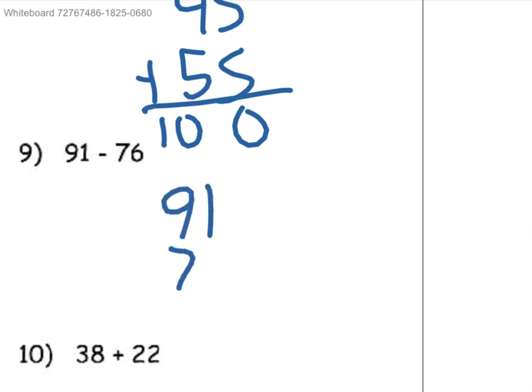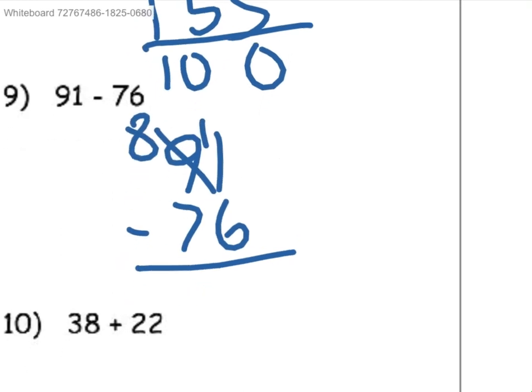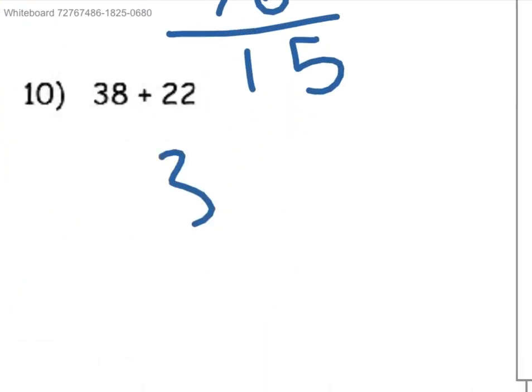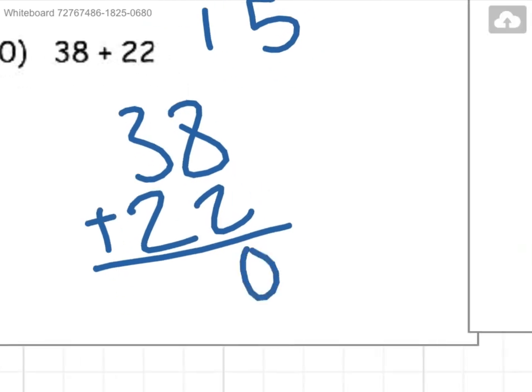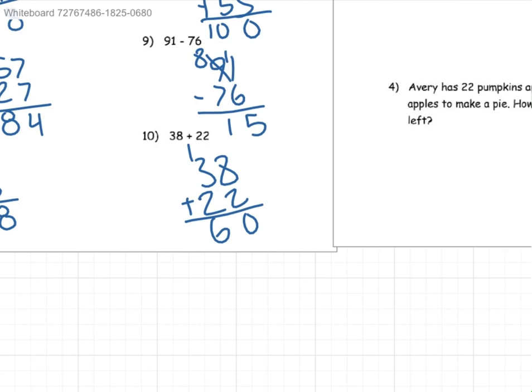91 minus 76. So turn this into an 8, put the 1 over here. 11 minus 6 is equal to 5. And then 8 minus 7 is equal to 1. So our answer is 15. 38 and 22, add that together. 8 plus 2 is equal to 10, carry the 1 over. And then 1 plus 3 plus 2 is equal to 6. So our answer would be 60.